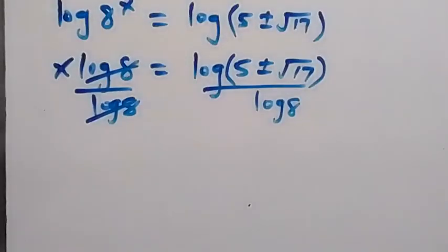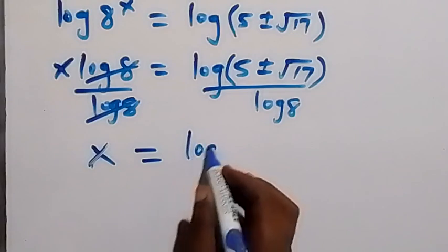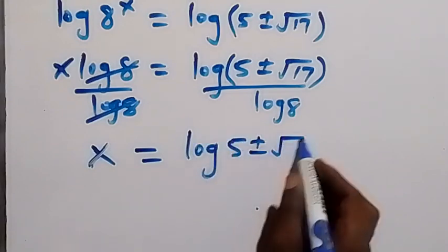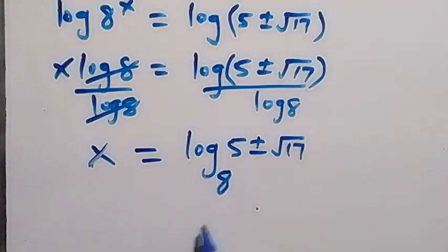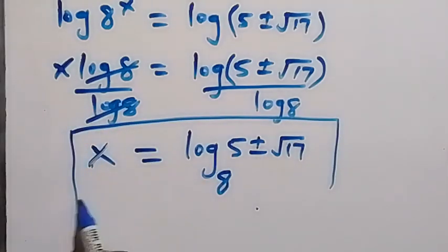And what we have left here is x which is equals to log 5 plus or minus square root of 17, then we can write it as base 8 from change of base. And here we have the solution to this problem.